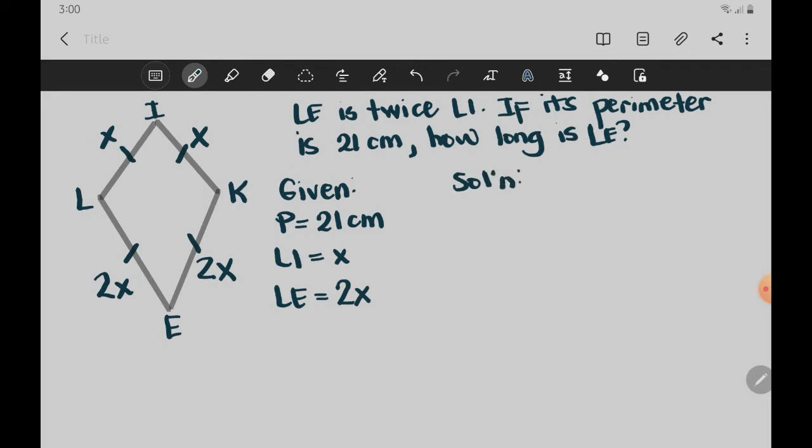So for our solution, we have the perimeter equals sum of all sides, meaning we are just going to add all those four sides. So we have X plus X plus 2X plus 2X. Since our perimeter is 21 centimeters, we can now substitute 21 to the perimeter. So P, we substitute 21, and then add all the variables here. X plus X, 2X plus 2X, 4X plus 2X, 6X.